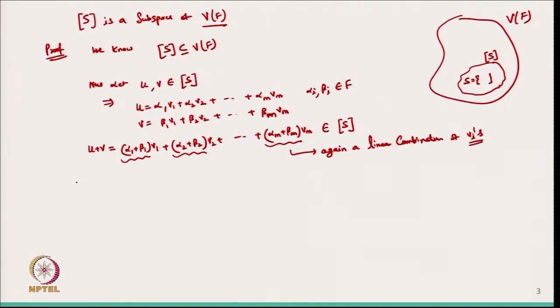For U + V, we can write it as (alpha1 + beta1)·V1 + (alpha2 + beta2)·V2 + ... + (alpham + betam)·Vm. Each alpha i + beta i is a scalar, so U + V is again a linear combination of V1, V2, ..., Vm. Therefore U + V belongs to span(S) — it is again a linear combination of the Vi's. This satisfies vector addition.